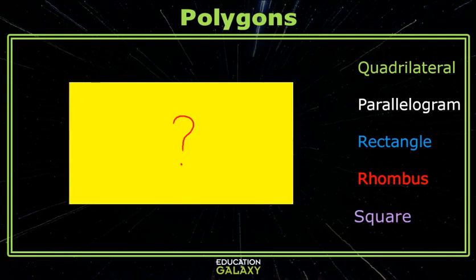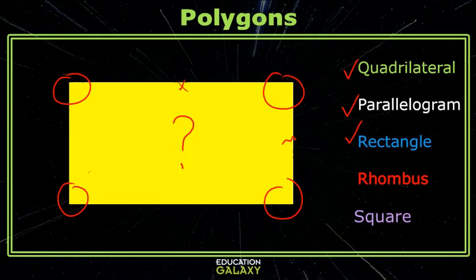Now what do we have? We still have a quadrilateral and a parallelogram. But look, we have four right angles. That means it's a rectangle. Are the sides congruent? No, so it's not a rhombus or a square.